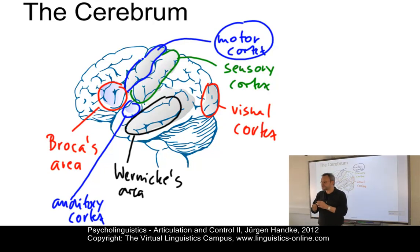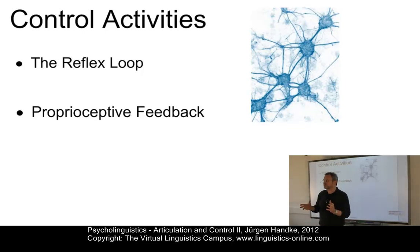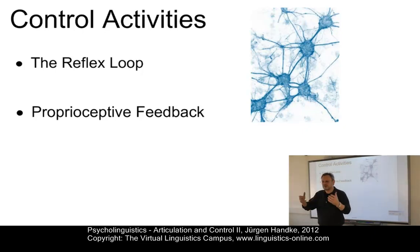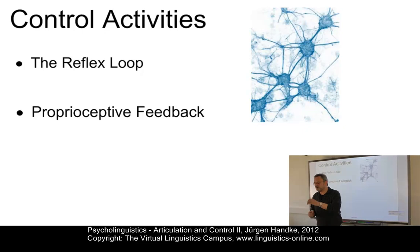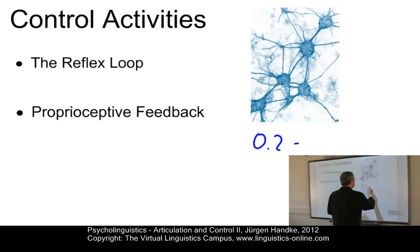In speech production, brain activity starts in the motor cortex and is transmitted via several neural pathways to the articulators. But it has to be controlled. Many body actions are automatic — we do not have to consciously remind our hearts to beat or our gastric juices to flow. But what about the speech signal — the transmission of motor cortex activity to the articulators? How long does it take? The central assumption is that the total time between the initiation of neural action and articulation is about 0.2 seconds.